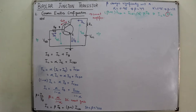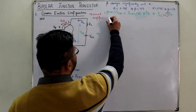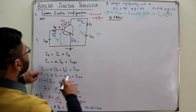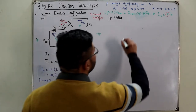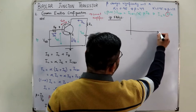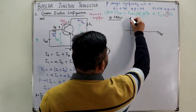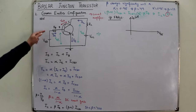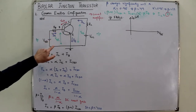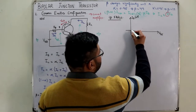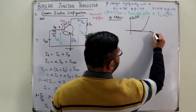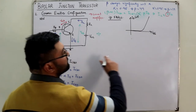Now for the input characteristics: this is the graph of input current versus input voltage. The input current is IB and the input voltage is VBE. Plotting IB versus VBE — this is just a forward-biased diode characteristic for the NPN transistor. The barrier potential is reached and the current rises, giving the typical forward-bias curve. This curve is drawn for a fixed value of the output voltage VCE.